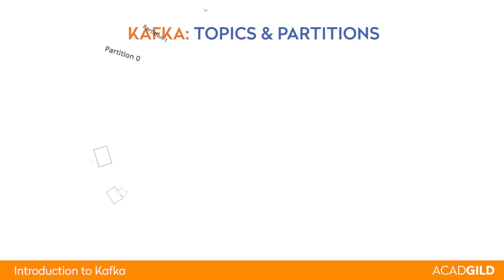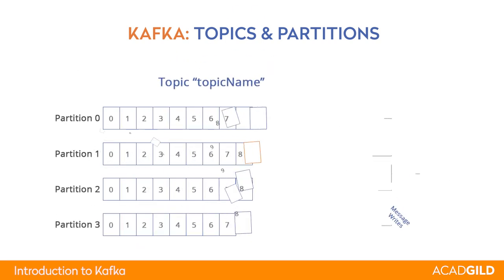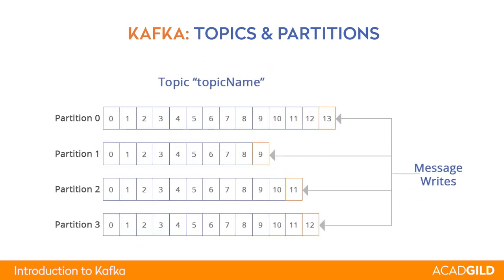In this example, we have a topic with four partitions. Every partition has a certain number of messages. Messages are always appended to the partition, so writing is extremely fast. No matter what the size of the partition is, you simply append a new message, so it takes a constant amount of time and is very quick.